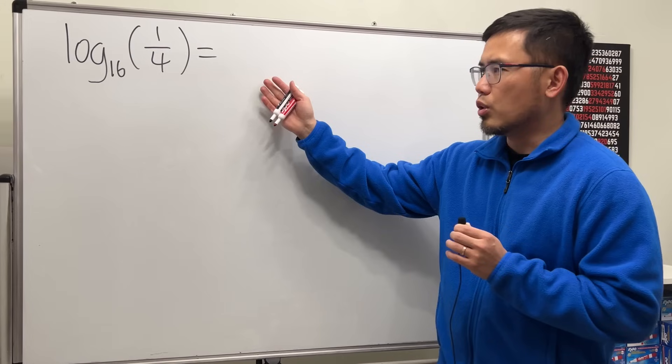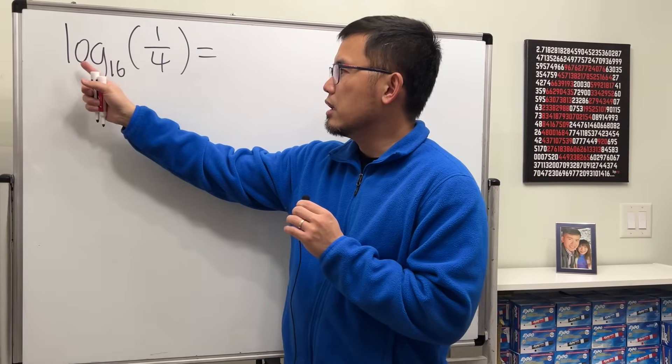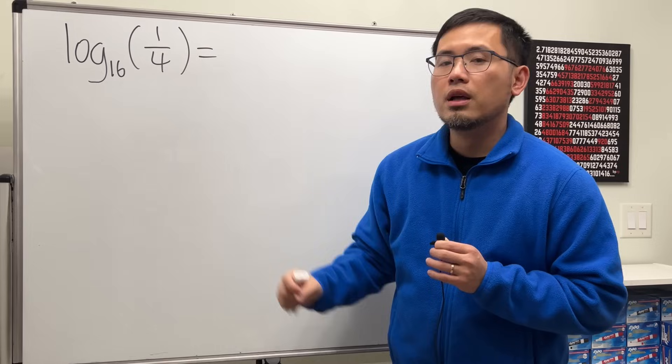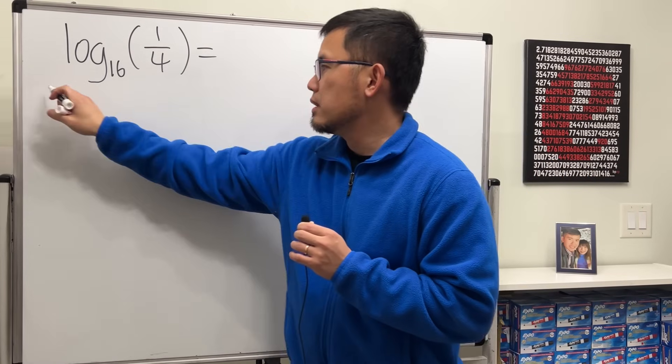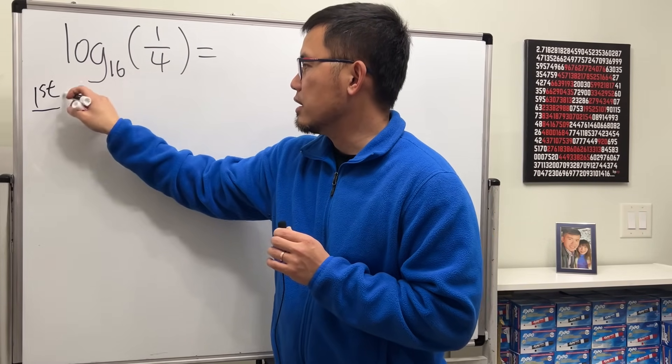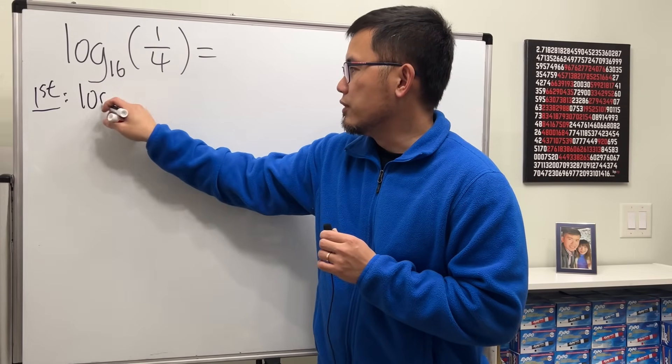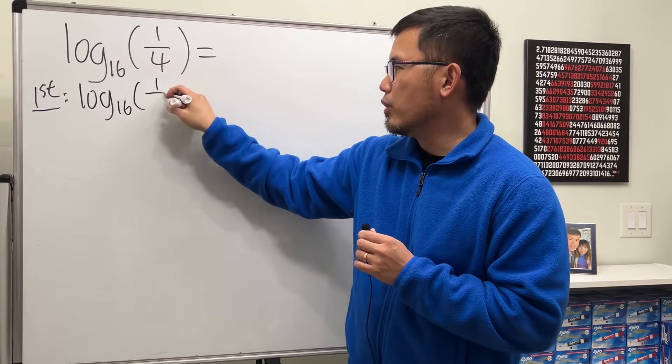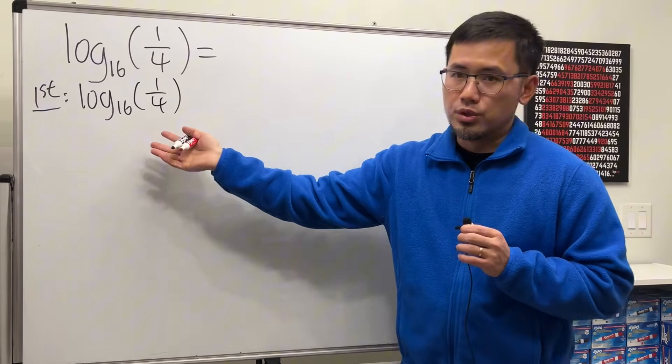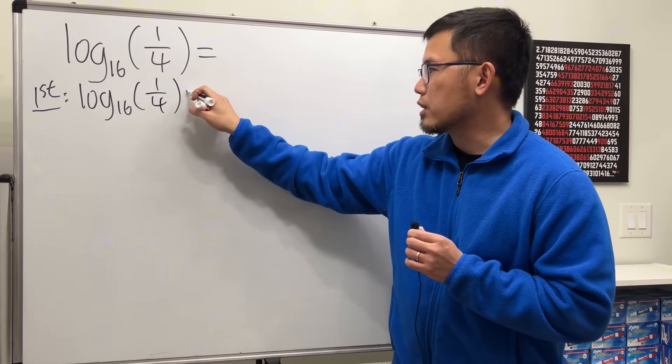So let's go over this. We are evaluating log base 16 of 1 over 4. I will show you two ways to do it. The first way is a standard way when we first learn about logarithms. We are trying to evaluate log base 16 of 1 over 4, but since we don't know what this is, let's just go ahead and call this